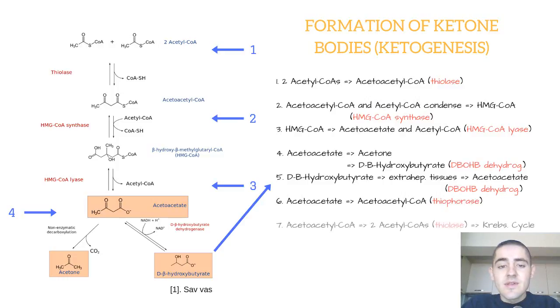Once acetoacetyl-CoA is formed it can be cleaved by thiolase to form two acetyl-CoA molecules which can then enter the Krebs cycle for energy production.